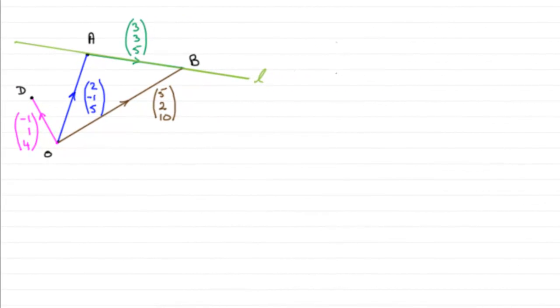In this next part, we're given the position vector of the point D as being minus 1, 1, 4. And you can see I've just added it to the diagram.